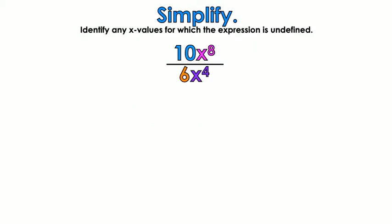Identify any values for which the expression is undefined. I'm going to show you the long way so your brain can process what's actually happening. First, 10 over 6 — what can I divide 10 and 6 by evenly? That's 2. So if I divide 10 by 2, I get 5, and if I divide 6 by 2, I get 3.